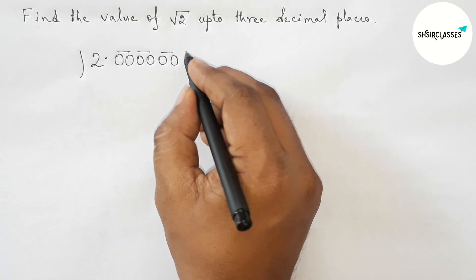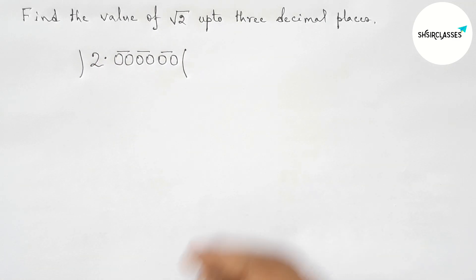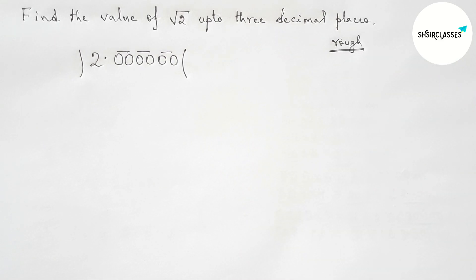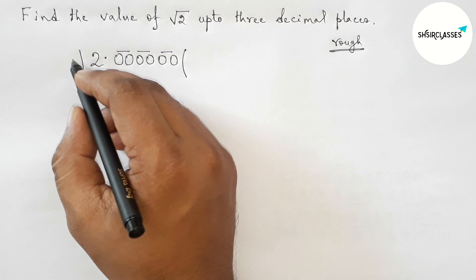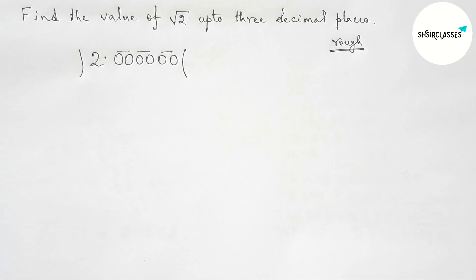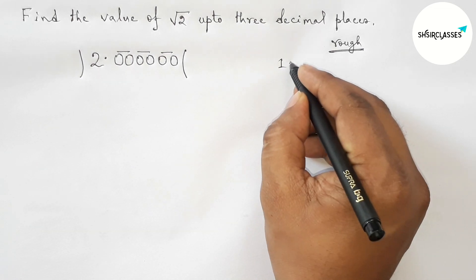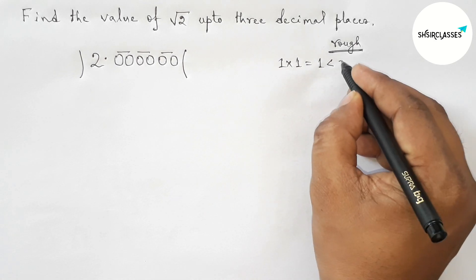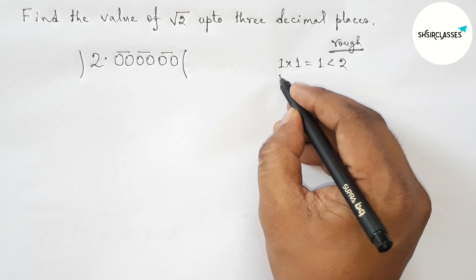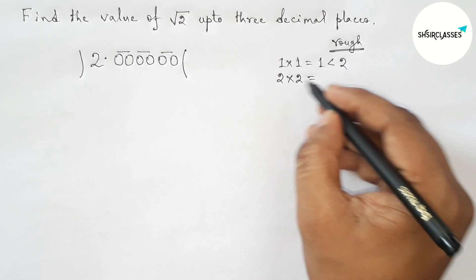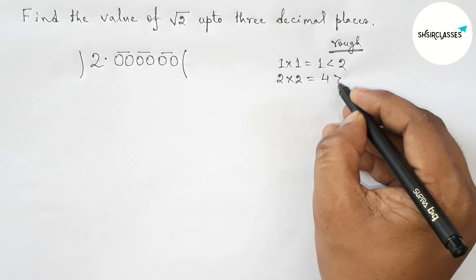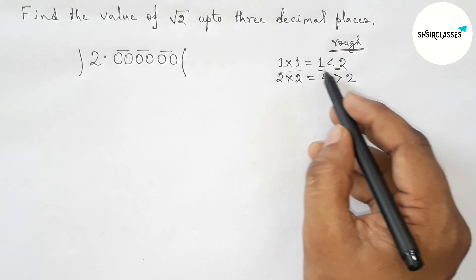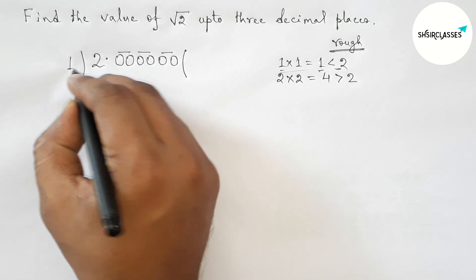Now draw a division line. We need to choose a number and multiply it by itself such that the result is less than 2. Taking 1 and multiplying by 1 gives 1, which is less than 2. Taking 2 and multiplying by 2 gives 4, which is greater than 2. So we choose 1.